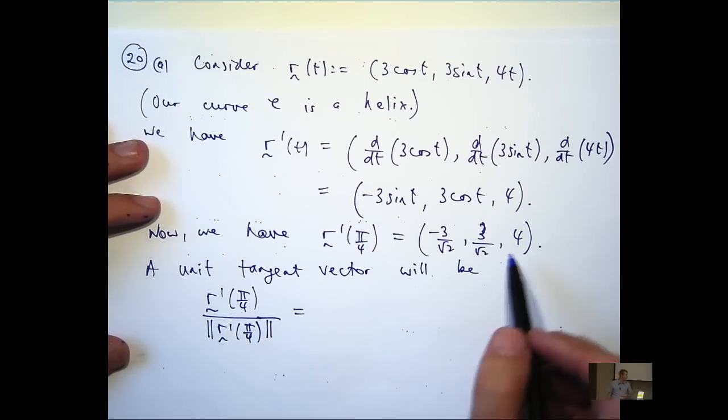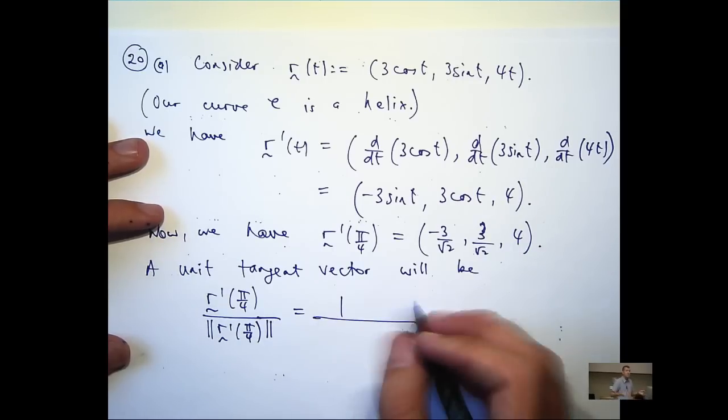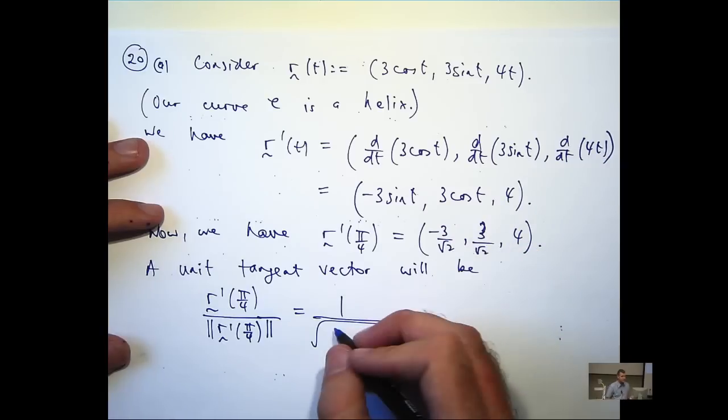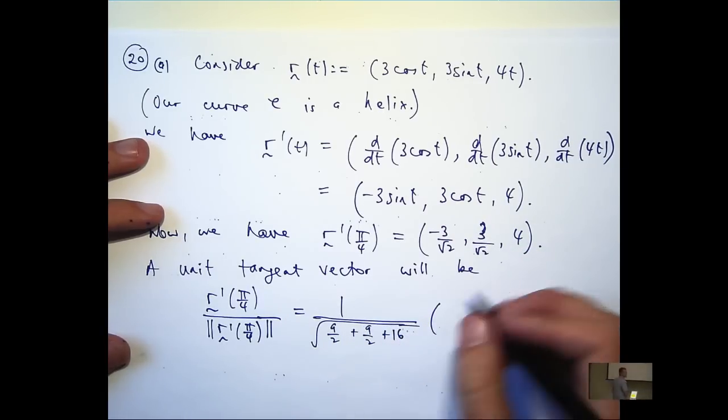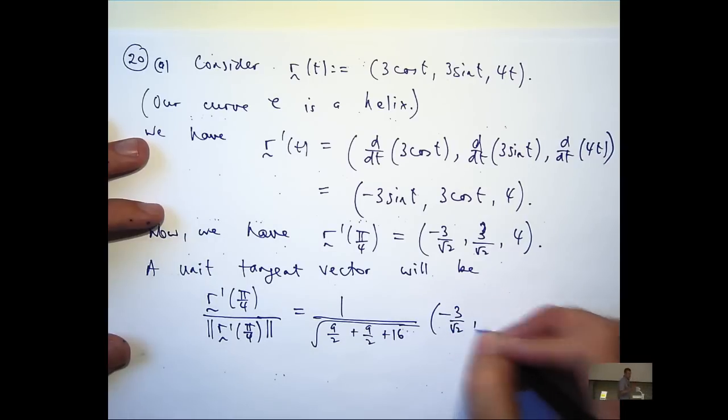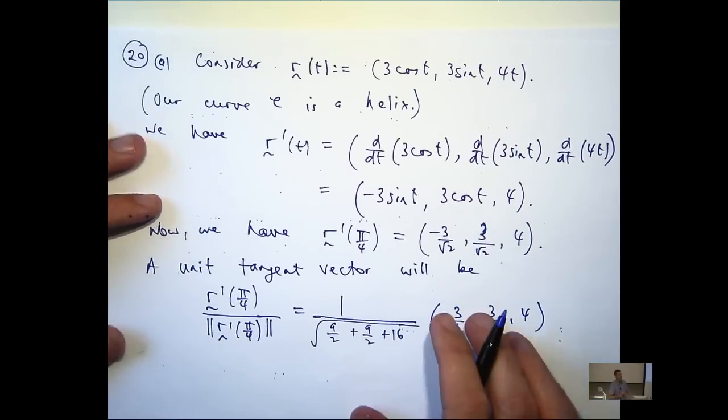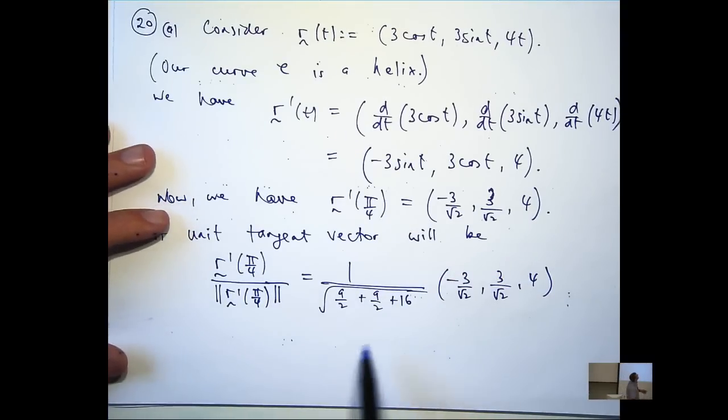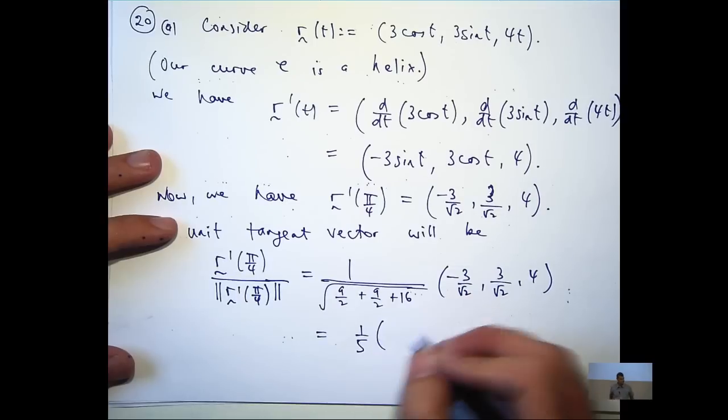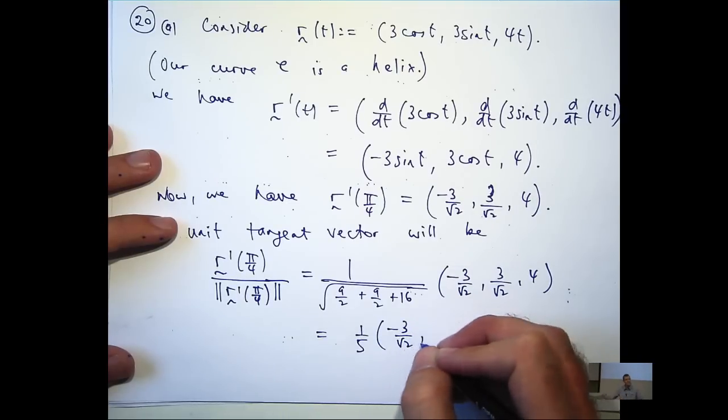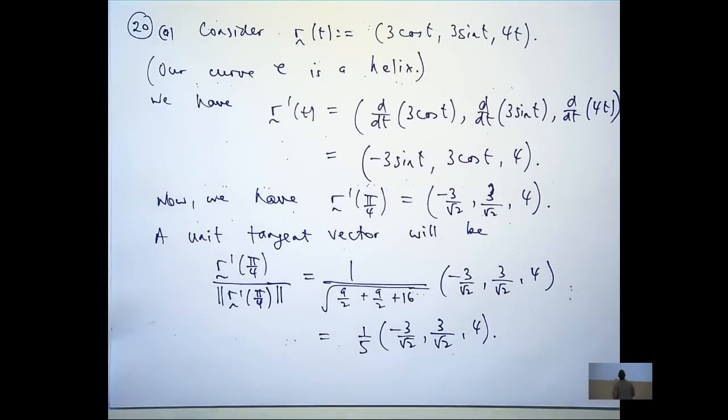Okay. So, what's that going to be? It's going to be something like 9, 9 on 2 plus 6. I'm going to get root 25. So, 1 on 5. That's going to be it.